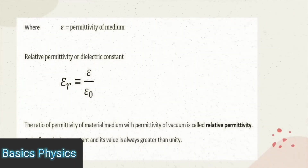Relative permittivity is defined as the ratio of the permittivity of a medium to the permittivity of vacuum, and is called relative permittivity. It is represented by E-R. E-R is dimensionless and its value is always greater than unity. Mathematically, E-R is equal to E divided by E-naught.